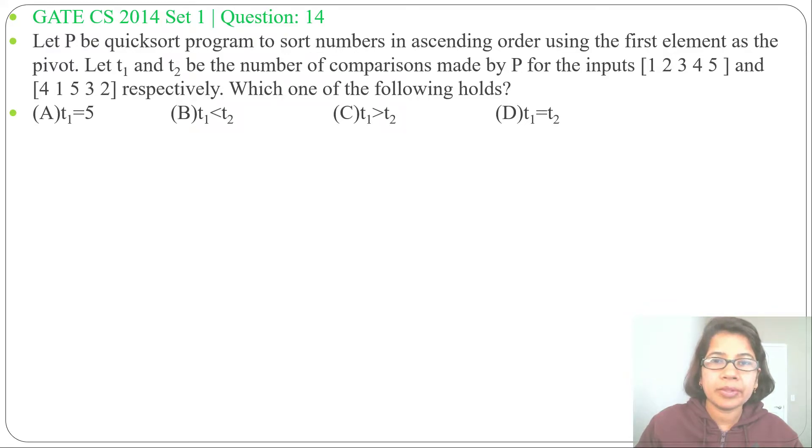Hi, let's solve one previous question on quicksort. This was asked in GATE CS 2014 Set 1, Question Number 14. Let P be a quicksort program to sort numbers in ascending order using the first element as the pivot.